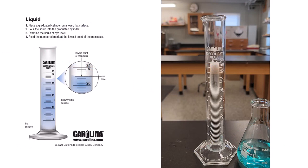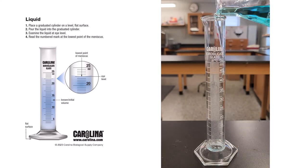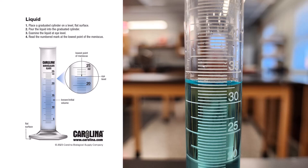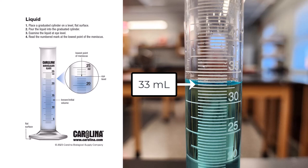To measure the volume of a liquid, you will need a graduated cylinder. Select a graduated cylinder of appropriate size. Place the graduated cylinder on a flat, level surface. Pour the liquid into the graduated cylinder. Examine the liquid at eye level. Read the numbered mark at the lowest point of the meniscus. In this example, the lowest point of the meniscus is at 33 mL.